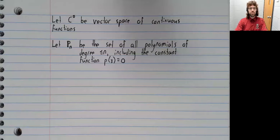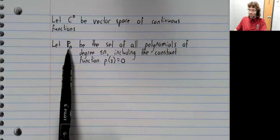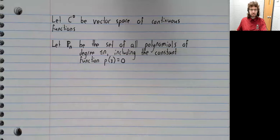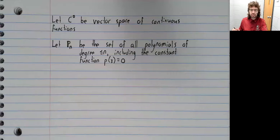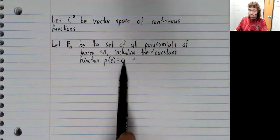We have seen that this set of continuous functions on R is a vector space because it is a subspace of the space of all functions. Let's now look at P sub n. This will be the set of all polynomials of degree less than or equal to n,